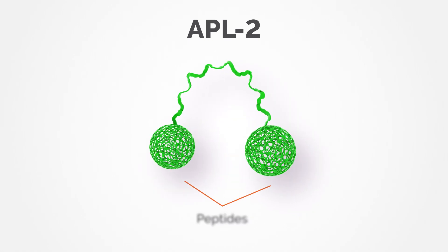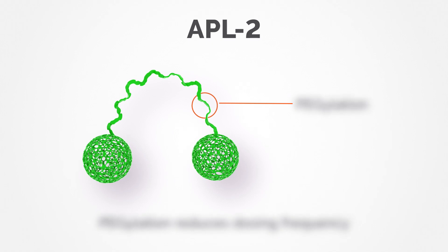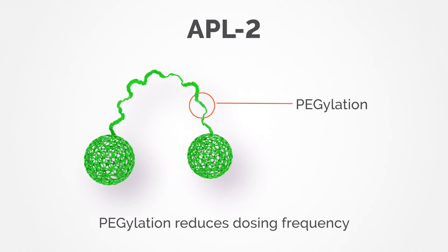APL2 is a pegylated cyclic peptide inhibitor of complement C3. Pegylation helps keep APL2 in the body longer, reducing dosing frequency.